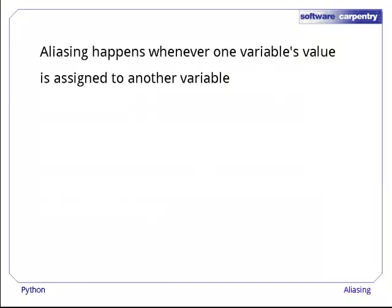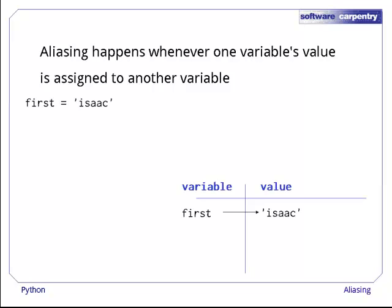In Python, aliasing happens whenever one variable's value is assigned to another variable, because variables are just names that store references to values. For example, if first refers to the string Isaac, then second assigned first copies the reference in first to second, after which second refers to the same string in memory as first.